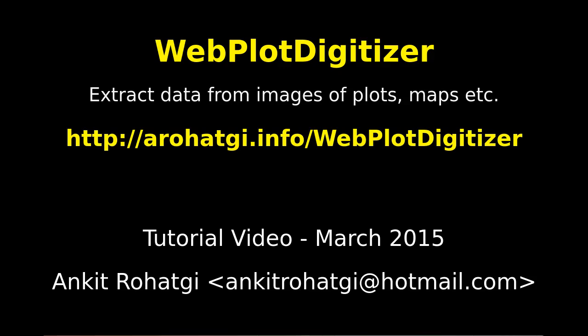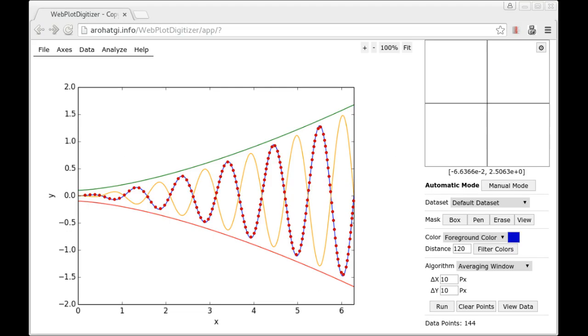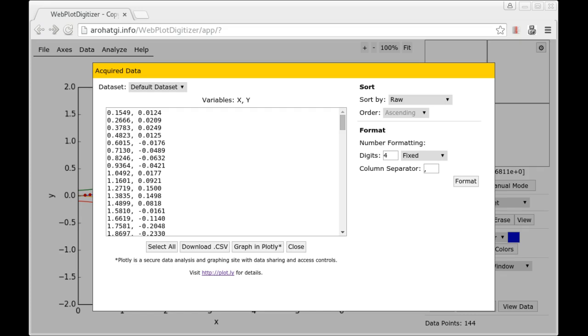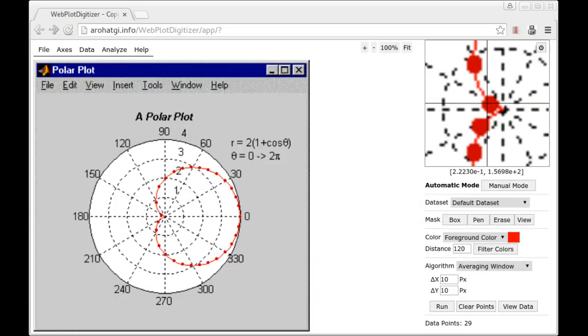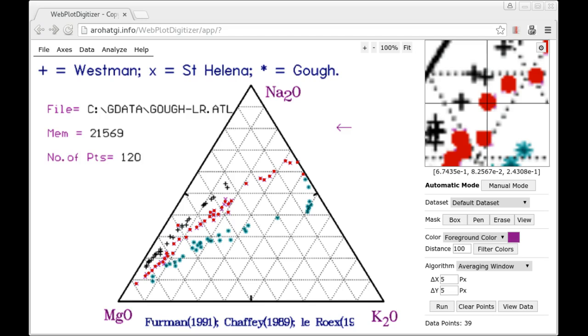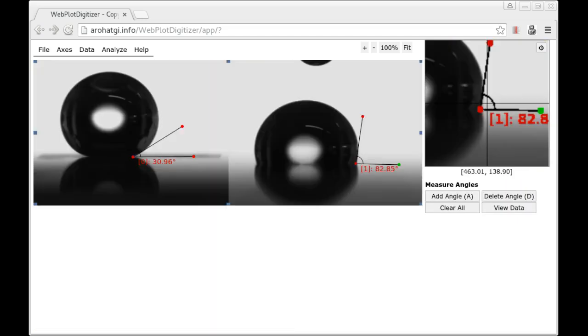This is a tutorial video for WebPlotDigitizer. WebPlotDigitizer is an online tool for extraction of numerical data from images of plots, maps, and other images. This can work on a variety of plots such as line graphs, scatter plots, polar diagrams, and ternary diagrams. This can also be used to make simple distance and angle measurements in an image.